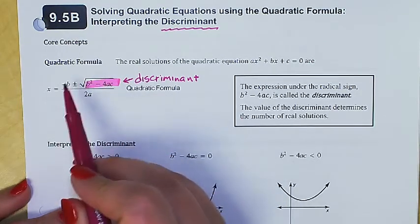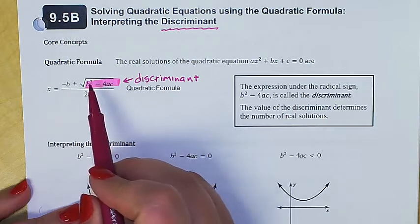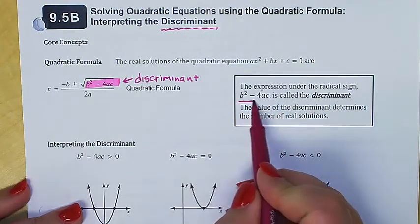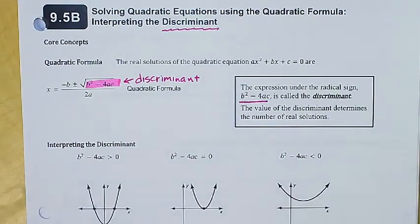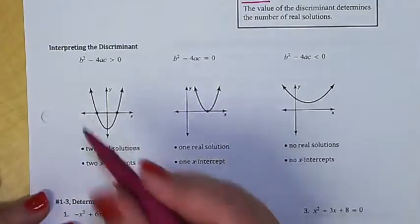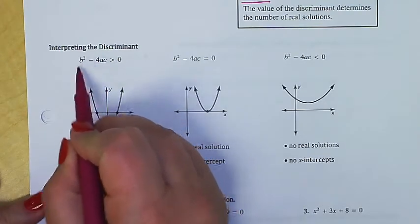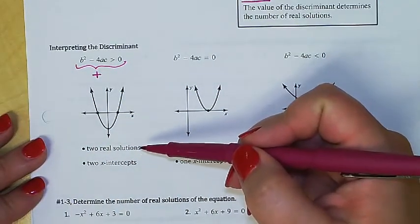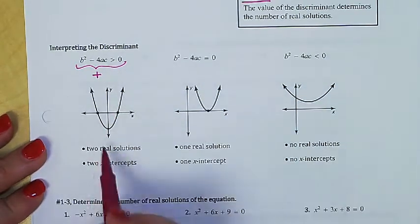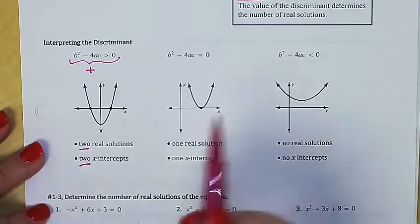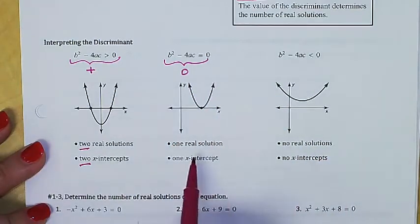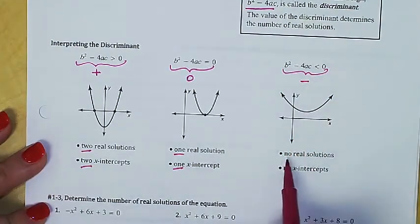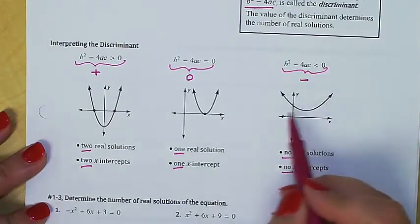In situations where we don't need the exact solutions, we don't need the whole equation — we can just evaluate the discriminant. The expression under the radical sign, b²−4ac, is called the discriminant, and its value determines the number of real solutions. If it's greater than zero, the quadratic has two real solutions, or two x-intercepts on its graph. If it's exactly zero, one real solution or one x-intercept. If it's less than zero, no real solutions — the parabola hovers above or below but never reaches the x-axis.